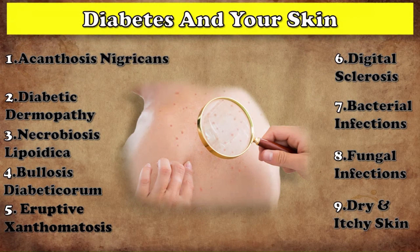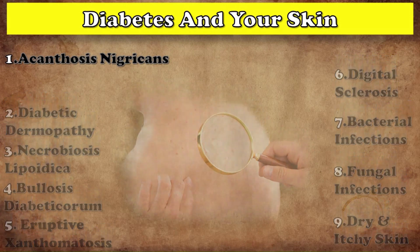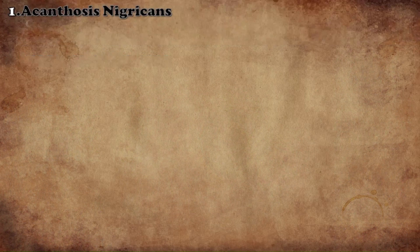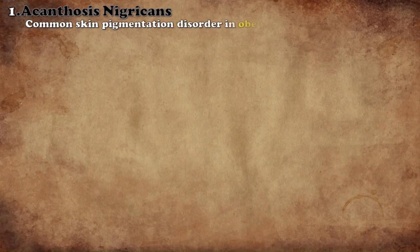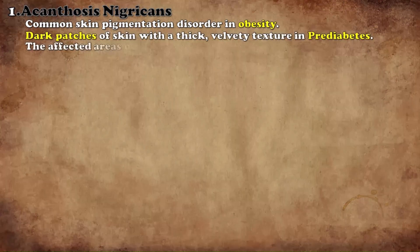Acanthosis nigricans is mostly seen in people who gain weight due to diabetes or those who are obese. In this disease, black spots are formed on the skin, and sometimes due to lack of cleanliness, these spots take the form of a thick layer. People who have high sugar levels have itchiness in the affected area or a bad smell.